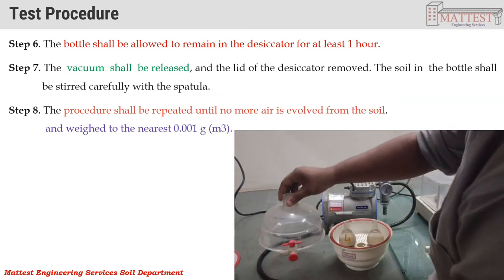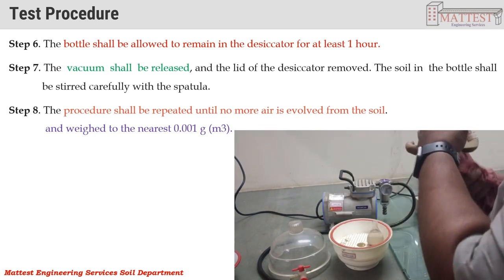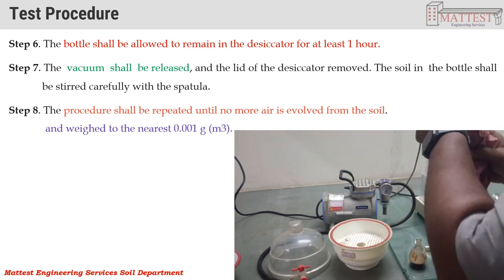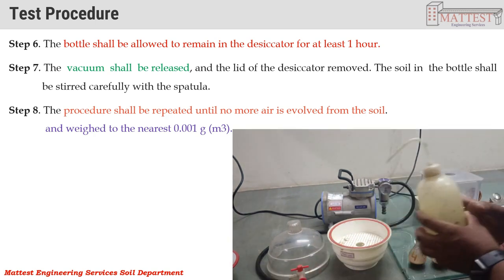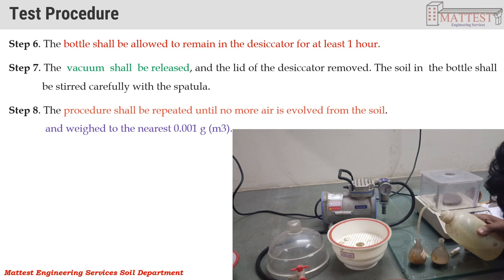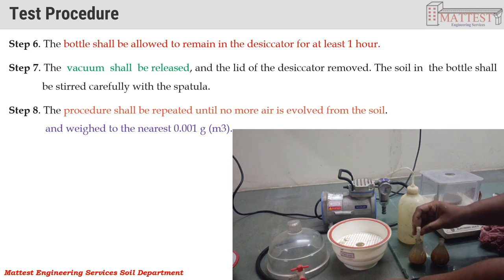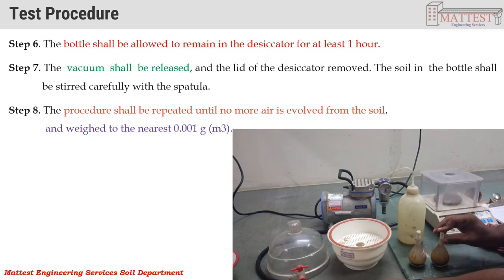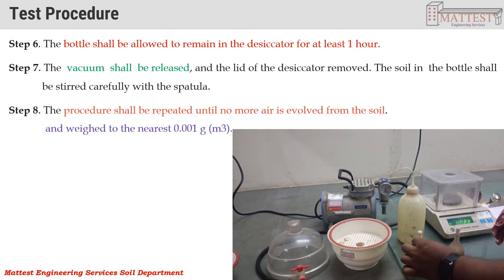Step 6: The bottle shall be allowed to remain in the desiccator for at least one hour. Step 7: The vacuum shall be released and the lid of the desiccator removed. The soil in the bottle shall be stirred carefully with a spatula. Step 8: The procedure shall be repeated until no more air is evolved from the soil, and the bottle shall be weighed to the nearest 0.001 g.